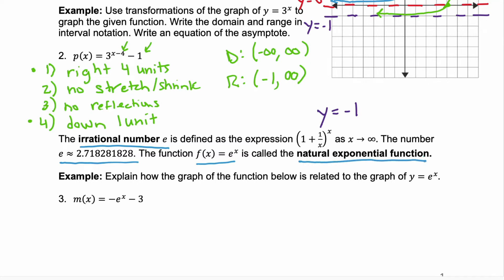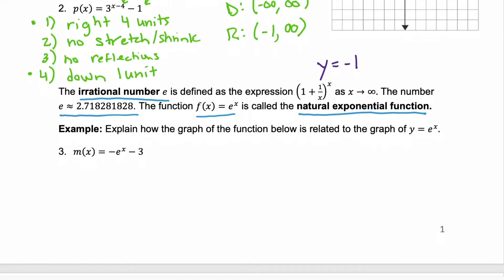We want to, in example 3, explain how you take that mother function, y = e^x, and transform it to get this function m(x). So we're really just reviewing those transformations again. Remember, do them in order. First, you're looking for those horizontal shifts. Are we shifting left or right? And no, there's no horizontal shift.